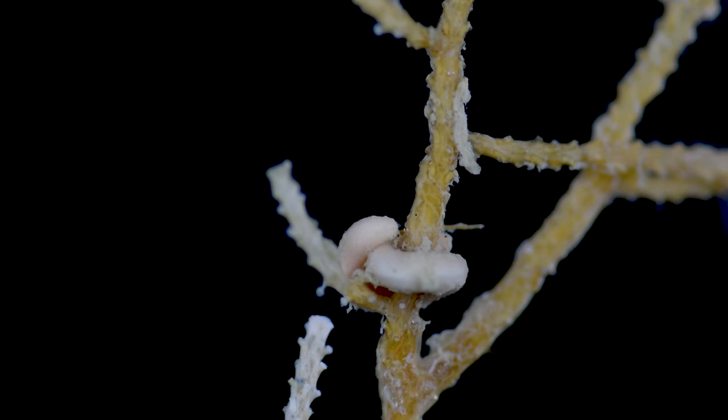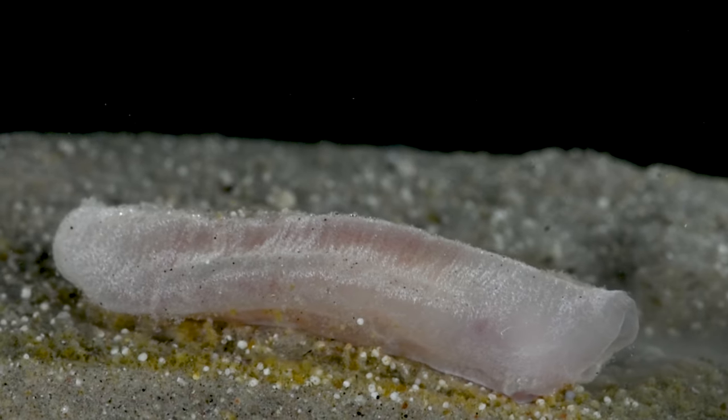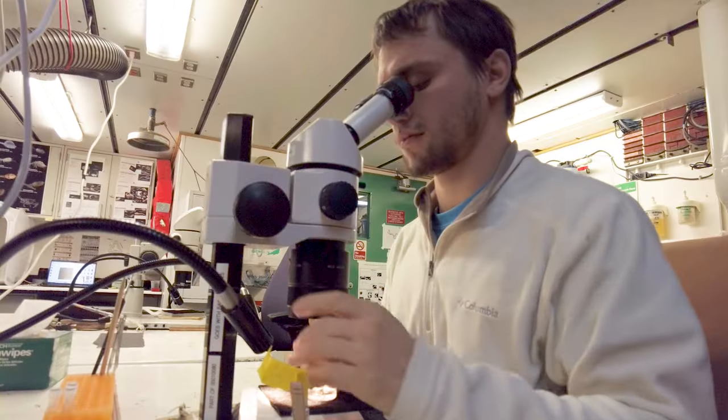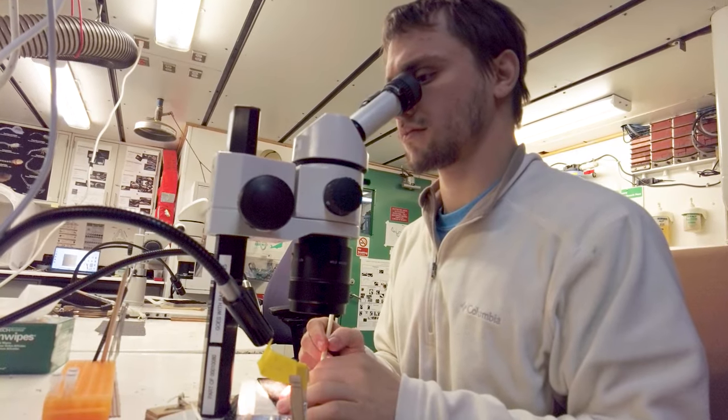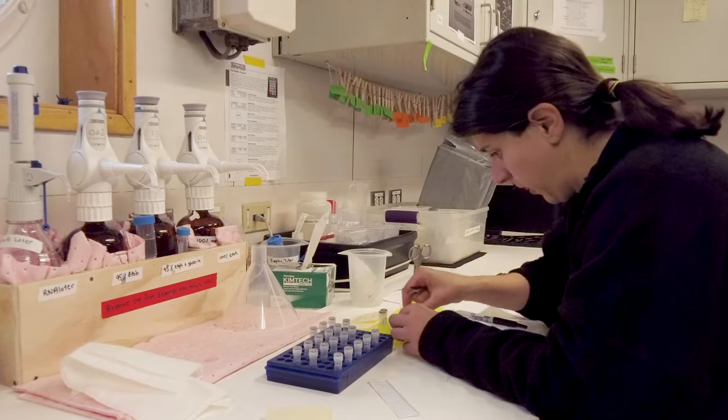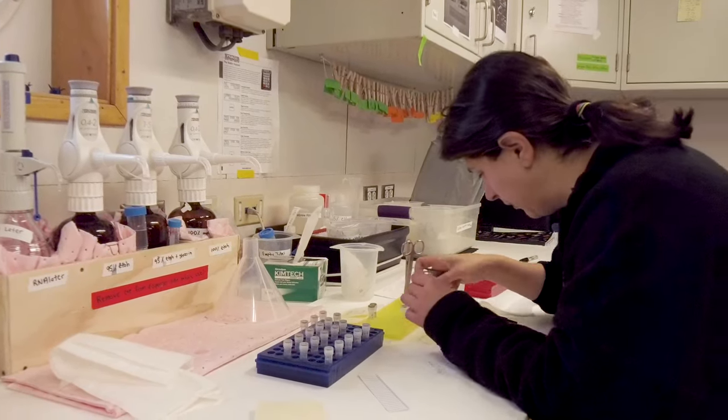There are about 300 described species of solenogasters, but that represents just a tiny fraction of the actual diversity of these animals. This means there is an exciting amount of discovery to be made in this group. They were the most poorly understood groups of mollusks, but we were hoping to fix that.